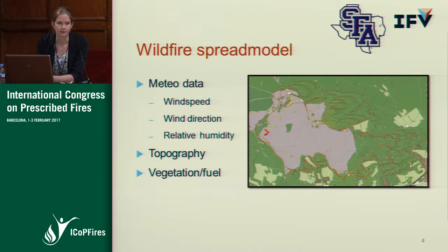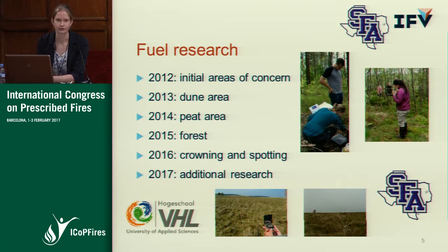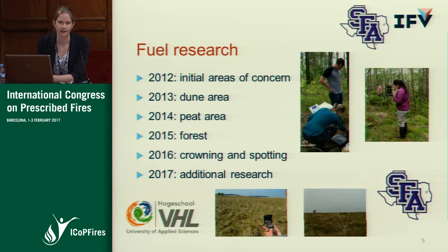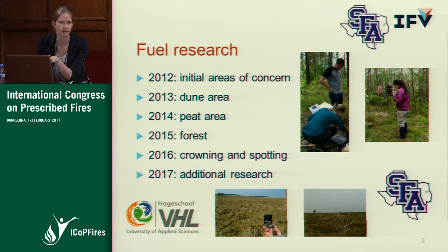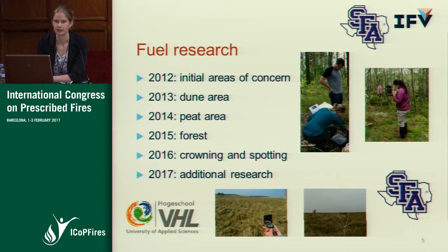The wildfire spread model needs meteorological data — wind speed, wind direction, humidity, rainfall, and topography — but also vegetation or fuel data. For the fuel data, we've been doing fuel research since 2012 in different vegetation types we have in Holland. We started in 2012 with heathfields, because most wildfires we have happen in grassland and heathfields, mostly in the dry sandy ground areas, but also in dune areas, peat areas, and forest — not just canopy fires but also ground fires. All this data is used to build up our wildfire spread model to get more data and better simulations.